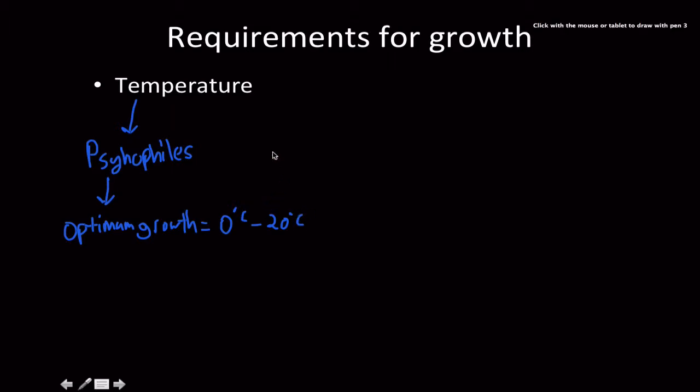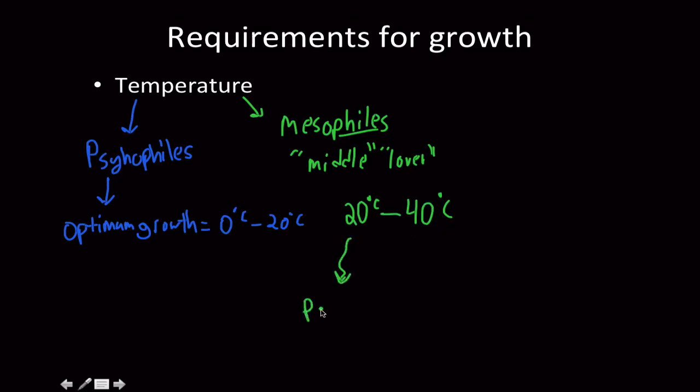Next on our list here are the mesophiles. The mesoderm means middle, and anything that is a phile is a lover. So these are things that love the middle temperatures, and what are those middle temperatures? Well it's anywhere between 20 degrees Celsius to 40 degrees Celsius. And this is where you get most of the pathogenic bacteria in the context of humans because the human body is at or around 37 degrees Celsius.